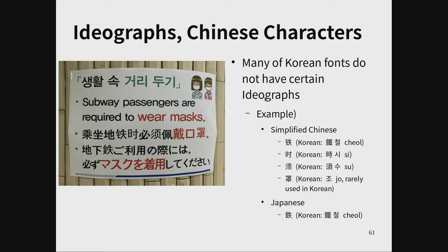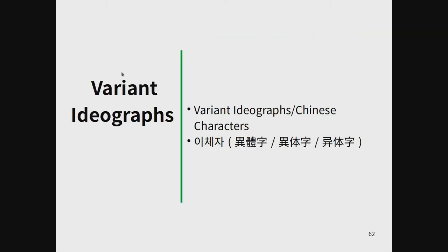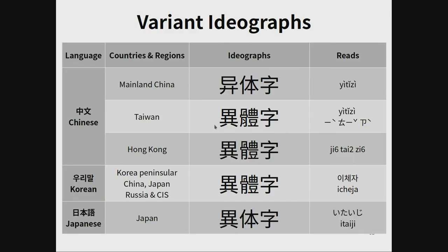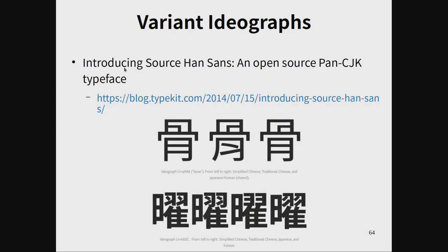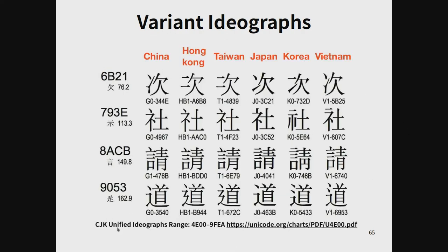An example is here — glyph is irregular. Ideographs on the Korean side are called Icheja. This is different across mainland China, Taiwan, Hong Kong, Korea, and Japan. This is an example of variant ideographs from the Adobe font blog Typekit. This is also an example from the Unicode Consortium's CJK unified ideographs range PDF files — China, Hong Kong, Taiwan, Japan, Korea, and Vietnam all differ.